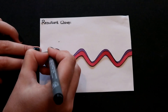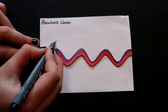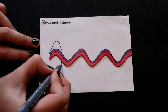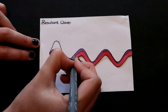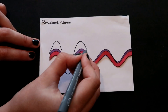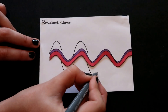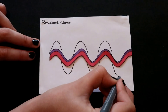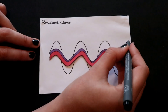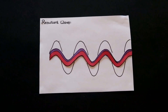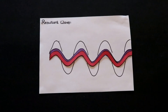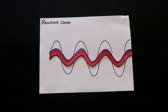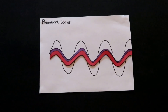If we go along the waves, adding the amplitudes together at every point, we can see that it gives us another wave with twice the amplitude of the two waves that we started off with. This is known as constructive interference — the two waves have added together to give us a bigger wave.